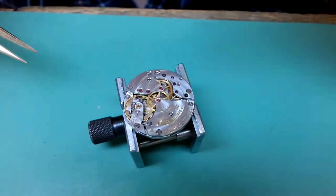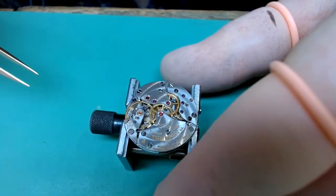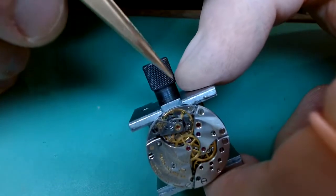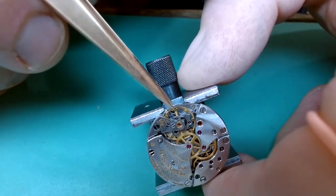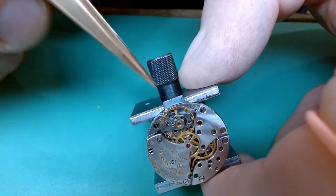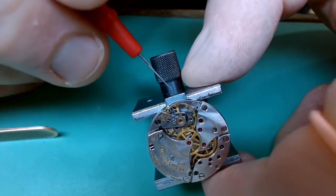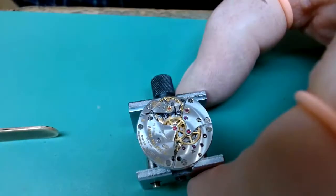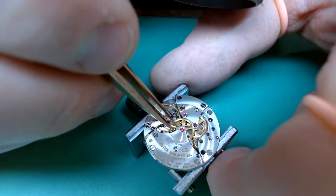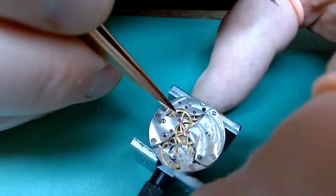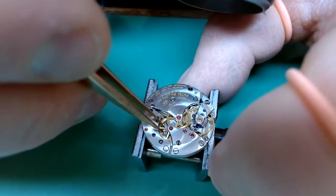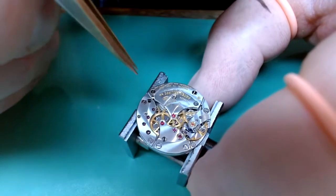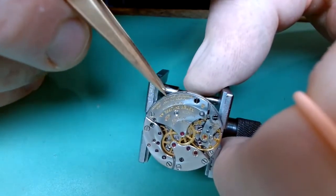Now that we've got that oscillating weight removed, we can get to dismantling the movement. What we want to do as we go is have a little look at our end shakes to make sure they're okay. We're also going to check these afterward because when we have old lubrication and gummed up lubrication, it can affect our end shakes, but it's good to just have an initial check.